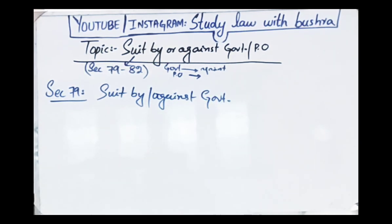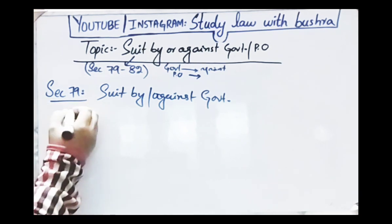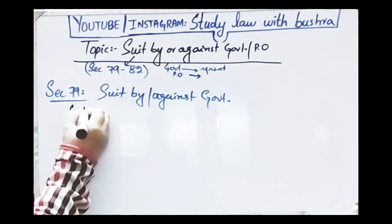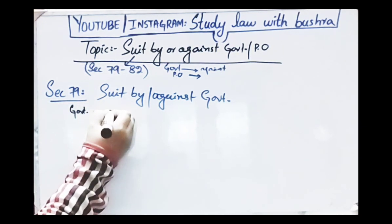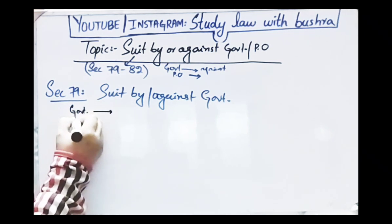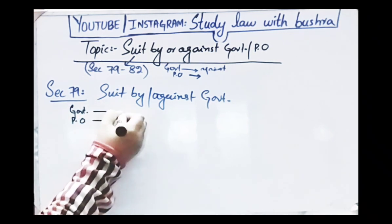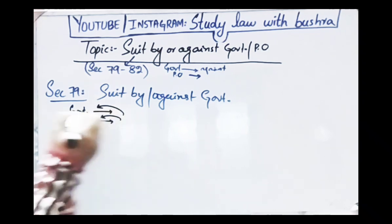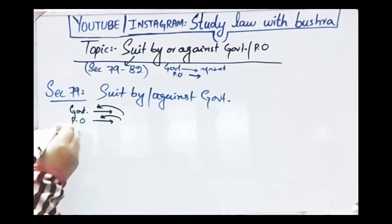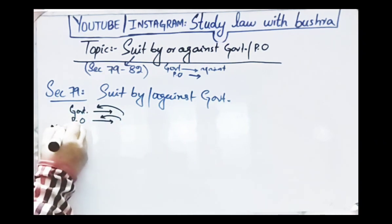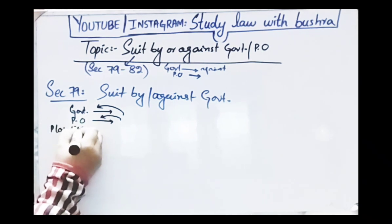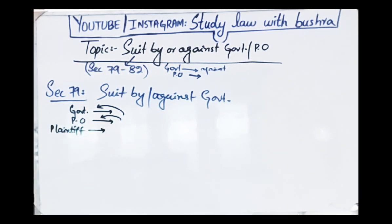Section 79 talks about suit by and against the government. In this section, the procedure is explained for suits by and against the government. The authority to be named as plaintiff or defendant, as the case may be, shall be as follows: this section tells us that if the government or public officer files a suit, or a suit is filed against them, then what authority will be written as plaintiff or defendant.